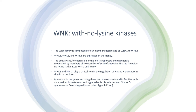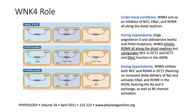The WNK — with no lysine kinases — is an important family of proteins composed of four members: WNK1, WNK2, WNK3, and WNK4. WNK2 is expressed in the colon, while WNK1, 3, and 4 are expressed in the kidneys. WNK1 and WNK4 play a critical role in the regulation of sodium and potassium transport in the distal nephron. Mutations in the genes encoding these two kinases are present in inherited hypertension and hyperkalemia — Gordon syndrome, or pseudohypoaldosteronism type 2 — which we will discuss when covering hyperkalemia and metabolic acidosis.